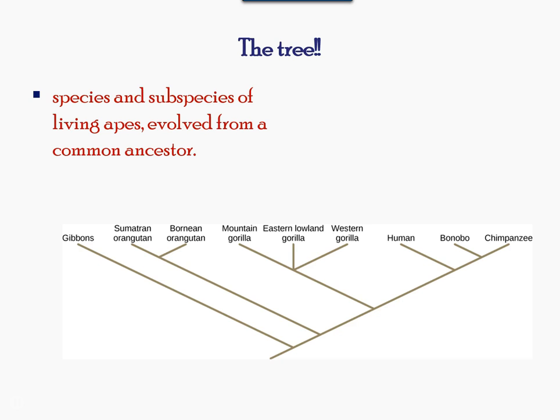A phylogenetic tree is a diagram that reflects evolutionary relationships among organisms or groups of organisms. A phylogenetic tree is rooted and shows how different organisms — in this case the species and subspecies of living cells — evolve from a common ancestor.